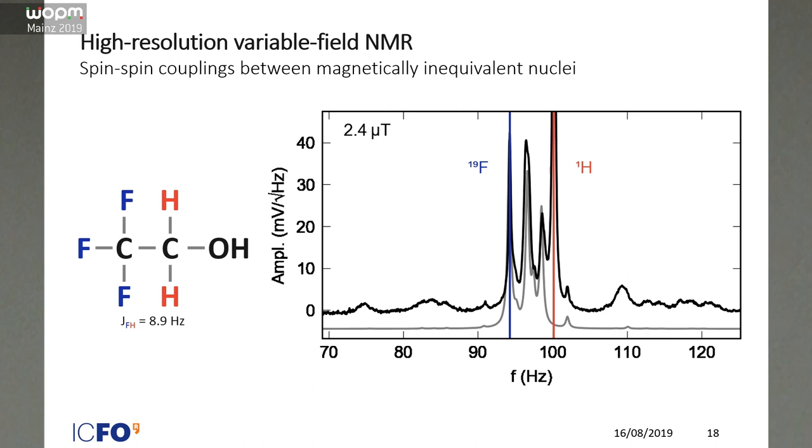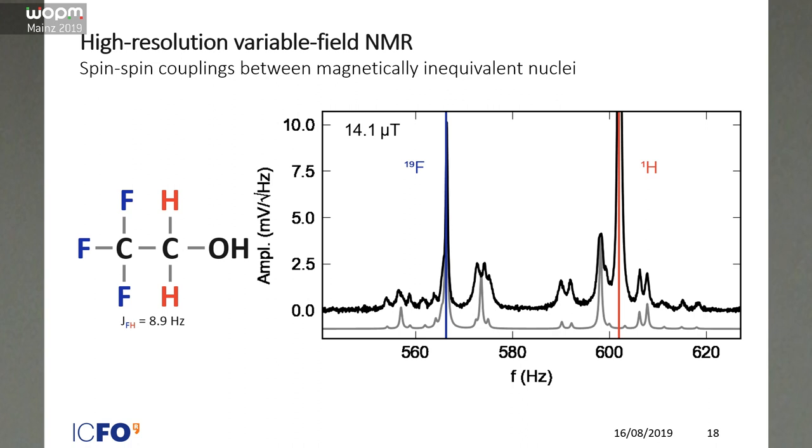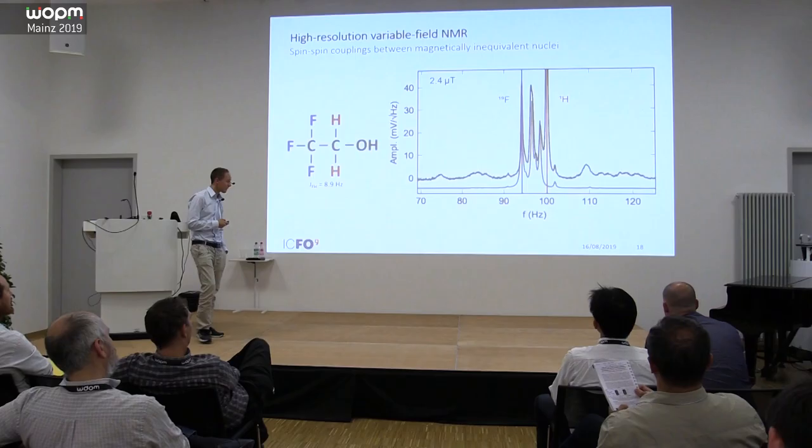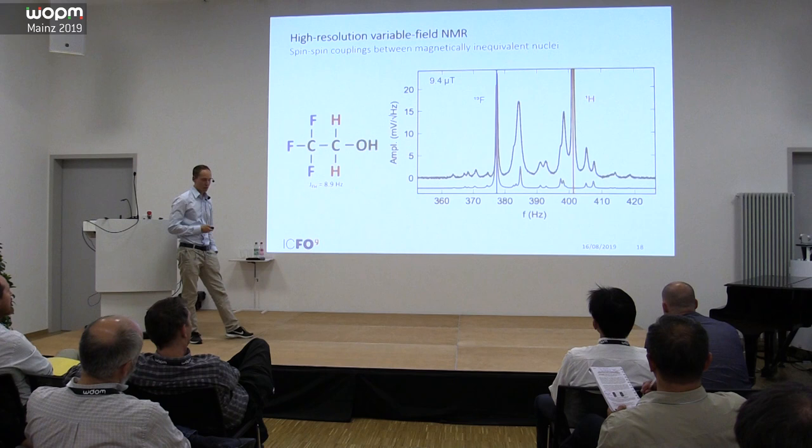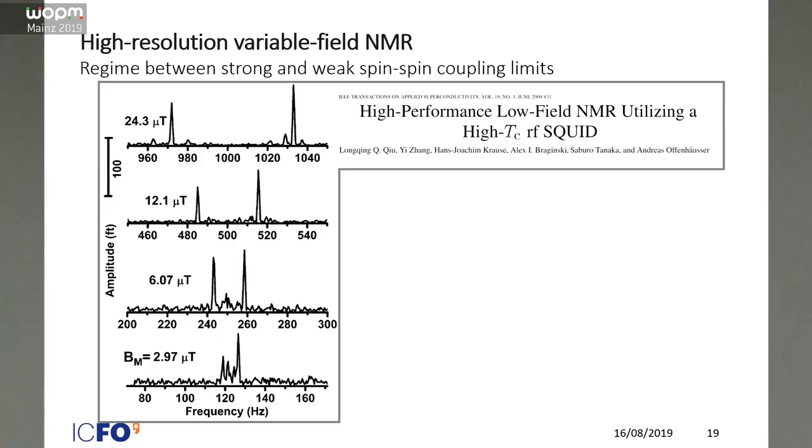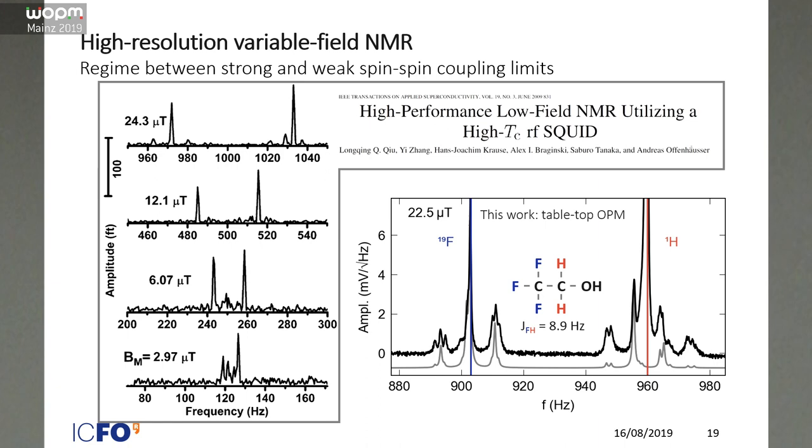We just ramped the field, gave it up to at least 23 microtesla, and we clearly see how the transition between the low field and the high field spectrum evolves. So we tried to compare that with some values in the literature, and we found a paper published 10 years ago which uses high performance superconducting interference device to detect the signal, and I would like to especially focus on the spectrum at the top here, which is recorded at 24 microtesla. What you don't see here is actually any splitting in the smaller peaks here. Compared to what we see, we can really resolve the splitting due to the coupling with the low field method.